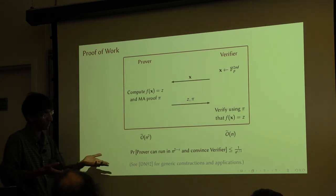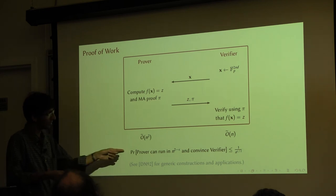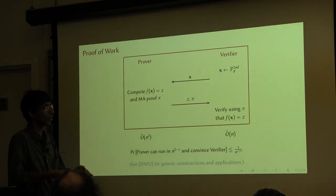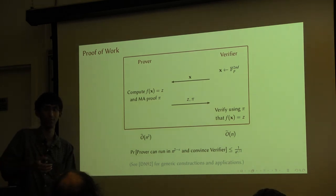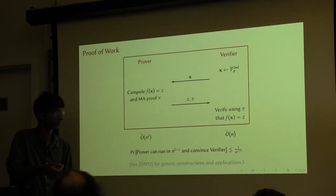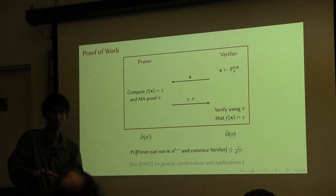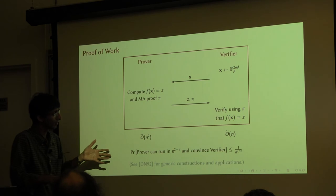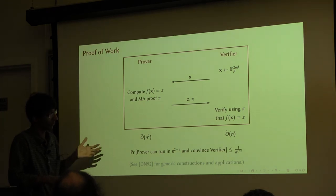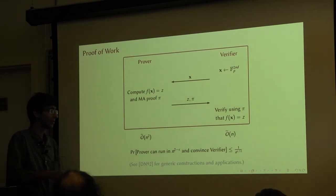This is one example of how studying average-case fine-grained complexity specifically can be useful. This construction could not have been done simply with an average-case complexity consideration alone — we really use the fine-grainedness and the property that the prover can run in n-squared time, because you also want that: you want the prover to be able to convince you if it does spend n-squared time. This is a very good example of what sort of applications there can be for average-case fine-grained complexity.